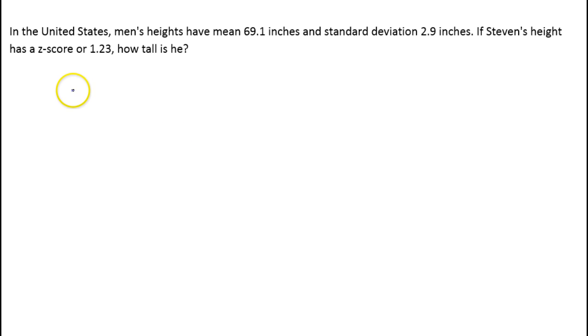Here is the z-score formula that you need to know. The z-score is equal to an individual person's value minus the mean divided by the standard deviation.